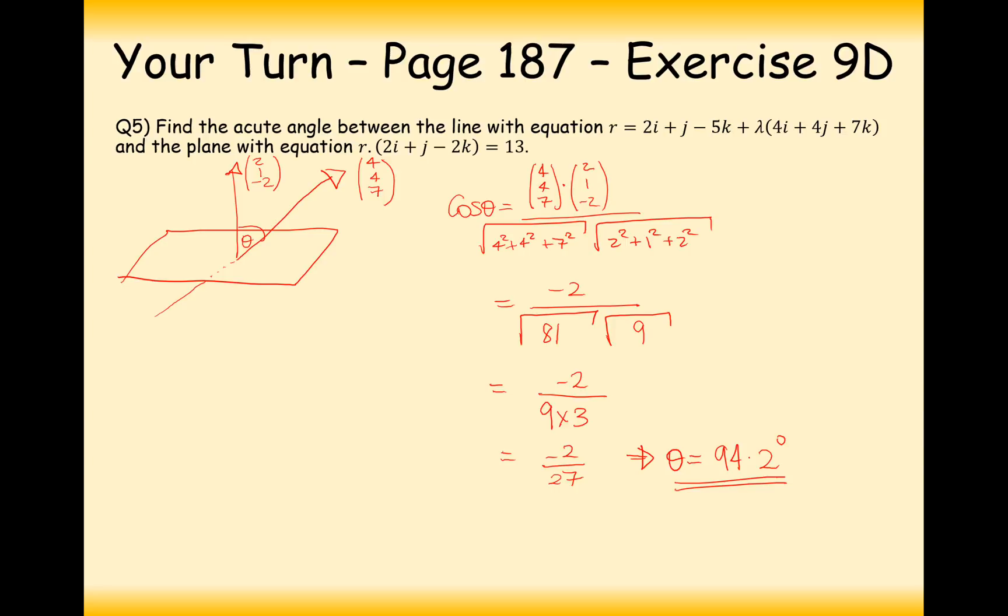Now, originally, we said that we're just going to do this angle subtract 90 degrees. In this case here, what we've got going on is we've got a direction vector going this way, a direction vector going this way. If we carry on those lines, that's fine.